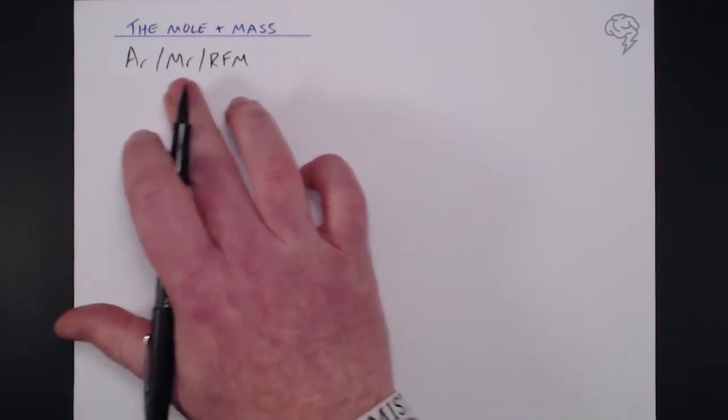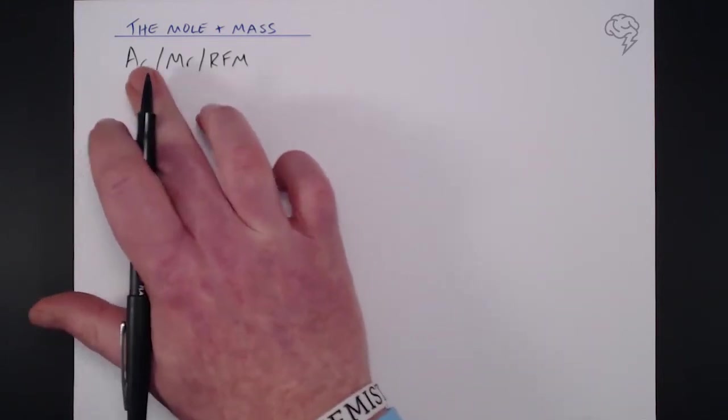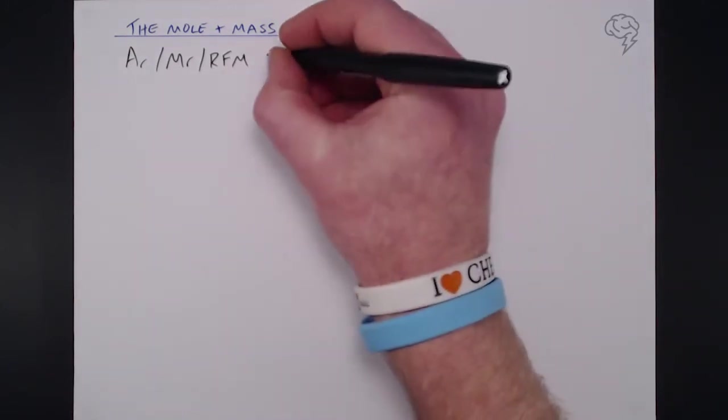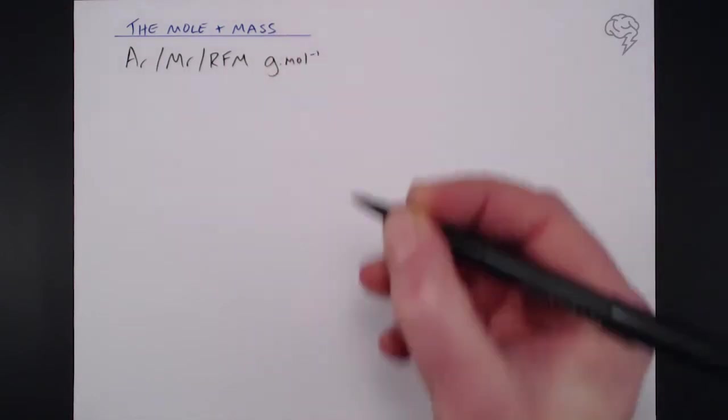Now if you remember, all of these things for elements, for molecules and for giant substances like ionic substances, relative formula mass, all of these are measured in grams per mole.